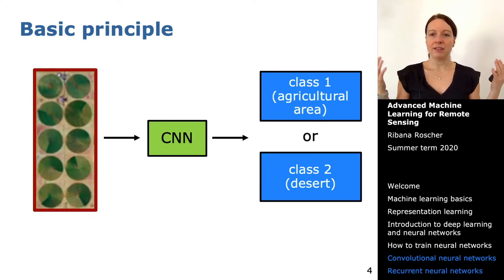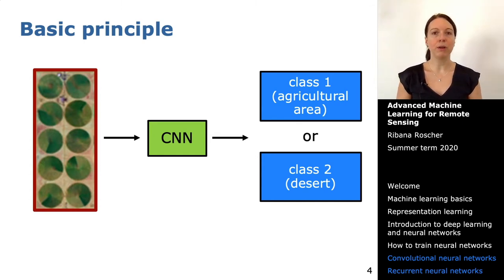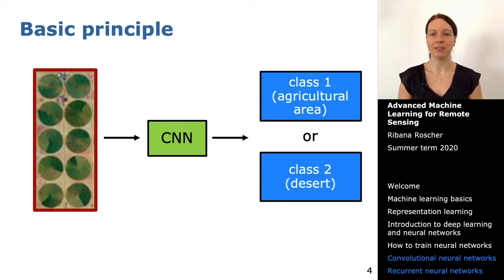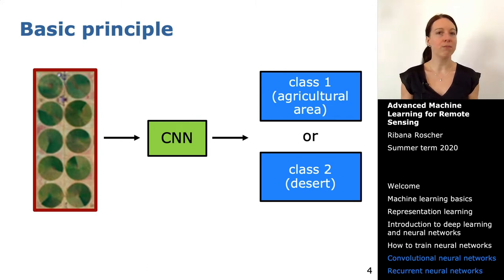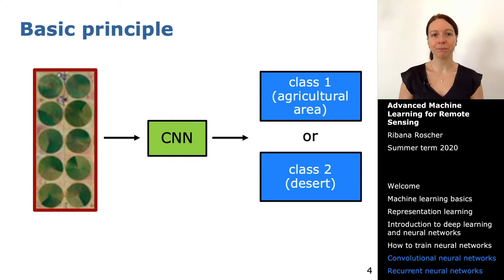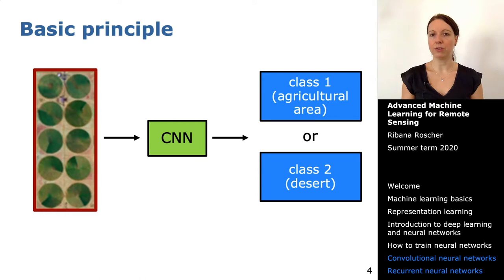Let's look at the basic structure of what happens when you apply a CNN. Your input is an image — a typical example of gridded input data. An image is nothing else than a 2D array of pixel values. If you have more than one spectral channel, you have a 3D array, but still a gridded structure. The CNN can then decide if it belongs to class 1 (aquaculture area) or class 2 (desert).